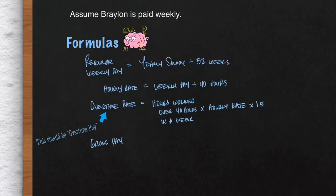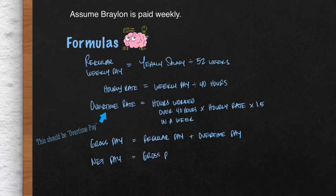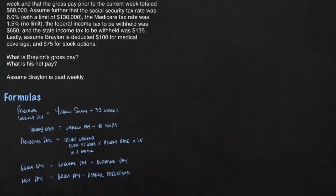Your gross pay is going to be made up of his regular pay and his overtime pay. Lastly, we'll calculate net pay. Net pay is your gross pay minus all of your payroll deductions. Depending on the employee, there could be a few deductions or there could be a lot. There are mandatory deductions and there are voluntary deductions when it comes to payroll.